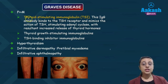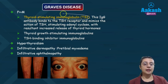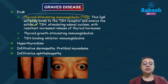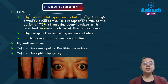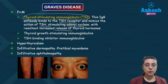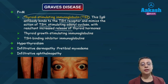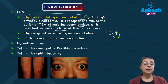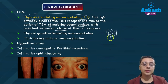Graves disease is the most common cause of hyperthyroidism, caused by thyroid-stimulating immunoglobulin (TSI). This antibody binds to TSH receptors, stimulates adenyl cyclase via cAMP, and leads to increased release of thyroid hormones. TSI is the key antibody implicated in the pathogenesis of Graves disease.